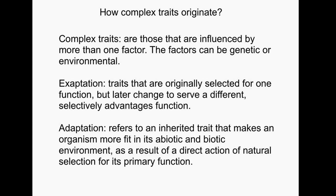Because evolution works without foresight, gross morphological structures rarely arise de novo, but instead derive from modifications to previously existing structures. Darwin was aware of exaptations in the Origin of Species, even though the term was not introduced until 1982.